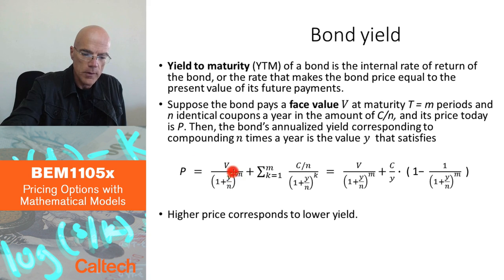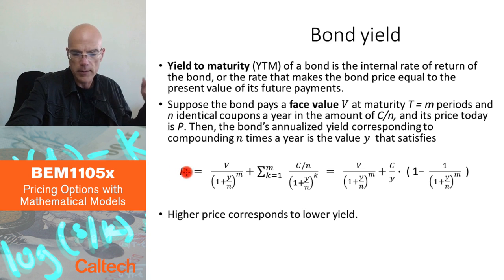The unknown is Y, right? We observe P today. You observe it, let's say, on the Internet. We know what the terms of the bonds are, how much it's going to pay in coupons and at the end. So the only thing we don't know is Y. Y can be computed from here, and that's called the yield or yield to maturity of a bond. And that's what is quoted.